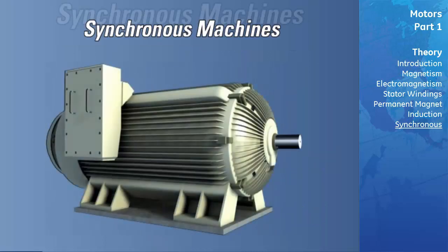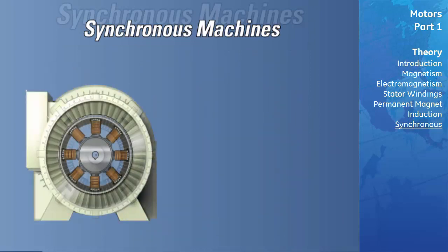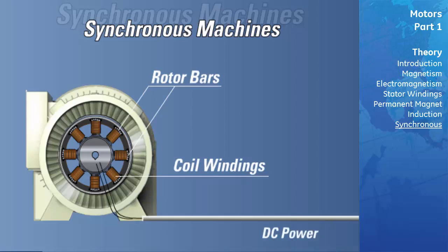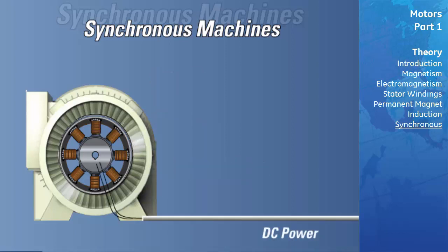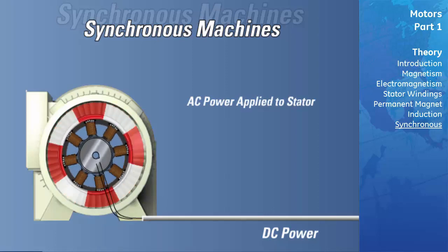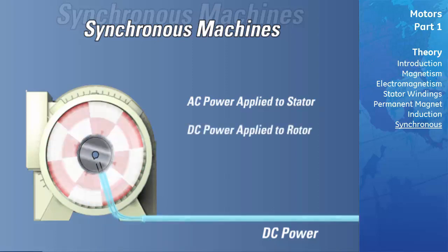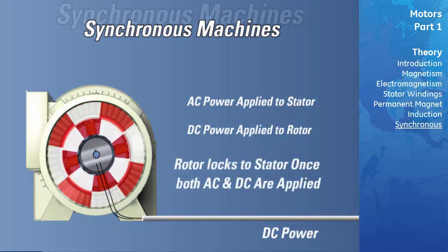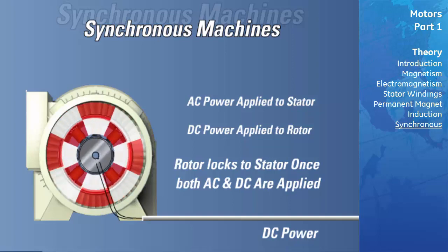Larger motors tend to be synchronous machines. The rotor of the synchronous motor is constructed similar to that of the squirrel cage rotor, but in addition to rotor bars, coil windings are added. These coil windings are connected to an external DC power source through a slip ring and brush assembly. During a start, AC is applied to the stator and the motor accelerates as an induction motor would. Once it reaches maximum speed, DC is applied to the rotor coils, producing a strong, constant magnetic field in the rotor. This field locks in step with the rotating stator field, and there is no difference in speed between the rotor and the stator's rotating field.